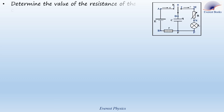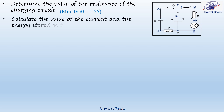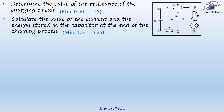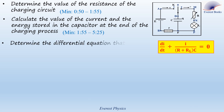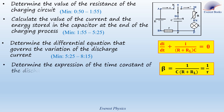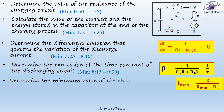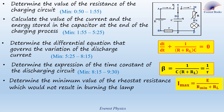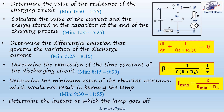In this Solve the Problem, we are going to determine the value of the resistance of the charging circuit, calculate the value of the current and the energy stored in the capacitor at the end of the charging process, determine the differential equation that governs the variation of the discharge current, determine the expression of the time constant of the discharging circuit, determine the minimum value of the rheostat resistance which would not result in burning the lamp, and determine the instant at which the lamp goes off.